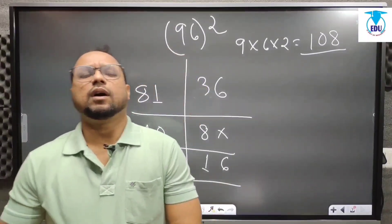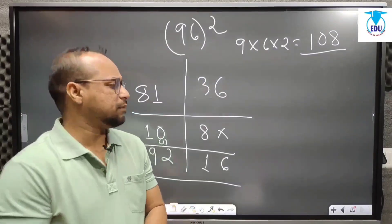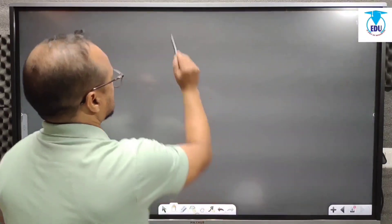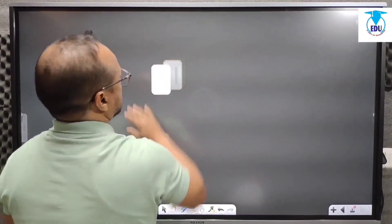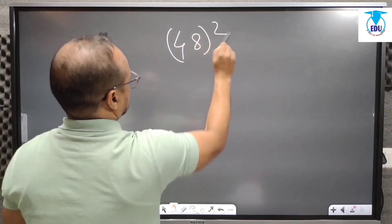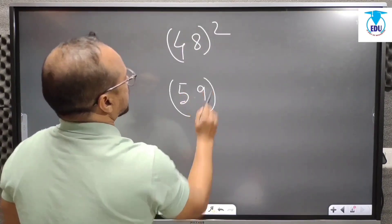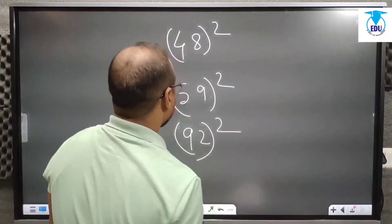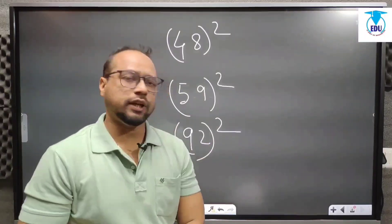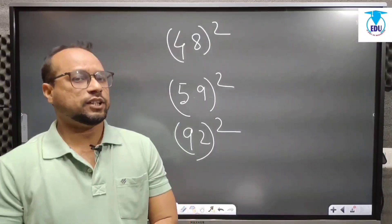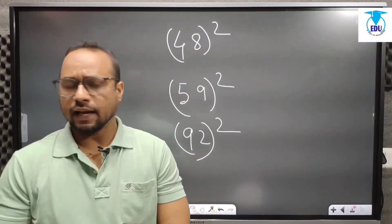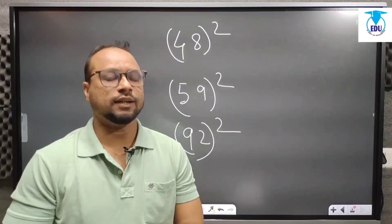All of you understood the concept with the short tricks. For practice at home, I am giving you some homework. You will do these at home and send them to my comment box. The questions are: 48 squared, 59 squared, and 92 squared. Do these three questions using my short tricks and send them to my comment box. If you really like this video, share it with your friends and family members, and if you haven't subscribed to our channel, kindly subscribe. Thank you so much.